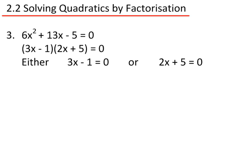So either 3x minus 1 equals 0, or 2x plus 5 equals 0. Rearranging, 3x equals 1, or 2x equals minus 5. So x equals one third, or x equals minus 5 over 2.